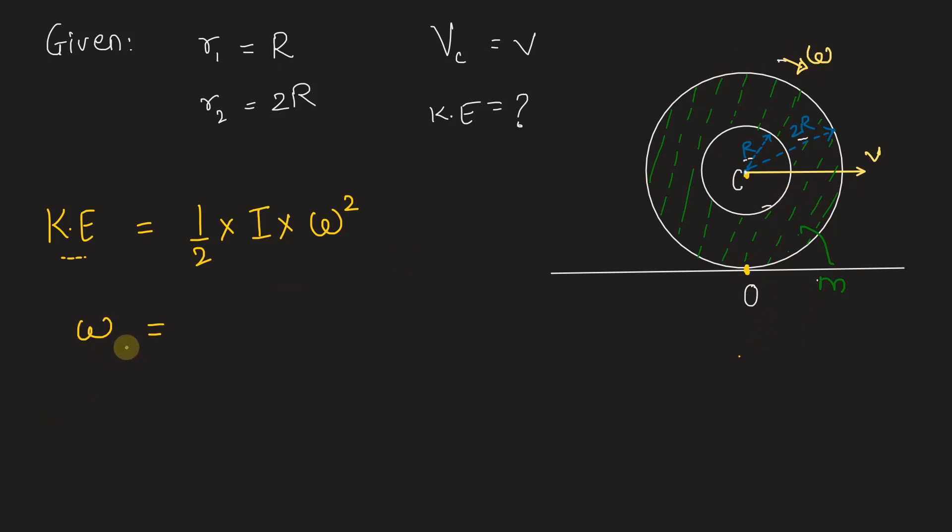Angular velocity of the disc omega can be calculated by using velocity of the center v divided by the maximum radius or the distance between extreme edge of the body from the center of mass which is 2R.